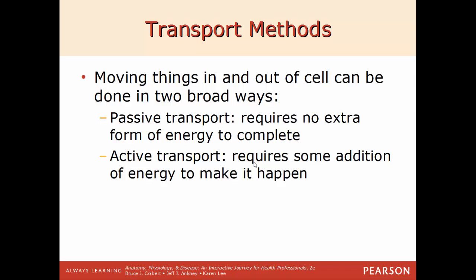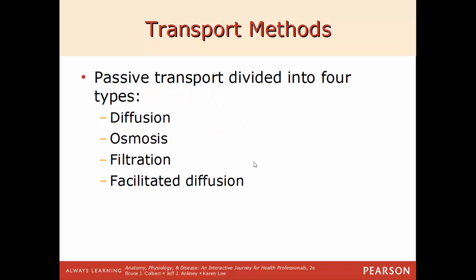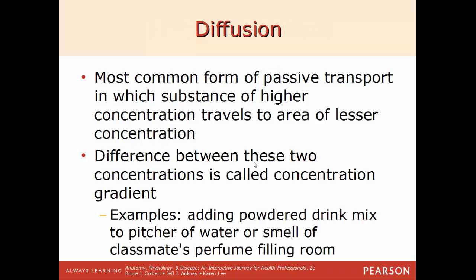In order for a cell to do anything, it has to be able to get materials it needs in and get waste and toxins out. There are two generic ways material can be moved: passive transport, which does not require any energy at all, and active transport, which does require energy. Examples of passive transport include diffusion, osmosis, filtration, and facilitated diffusion. We'll discuss all four. The first is diffusion, the most common type of passive transport.